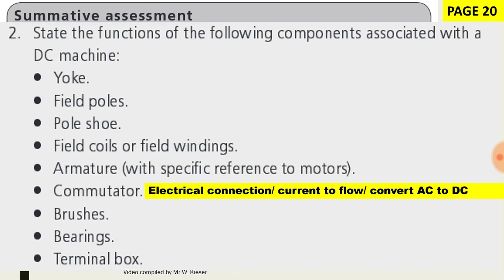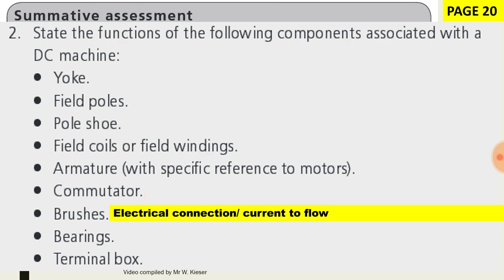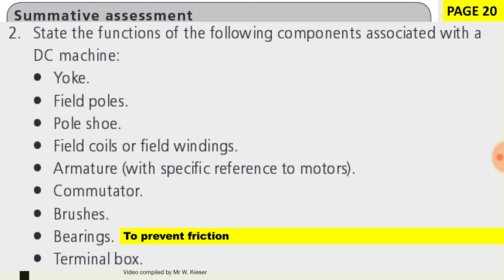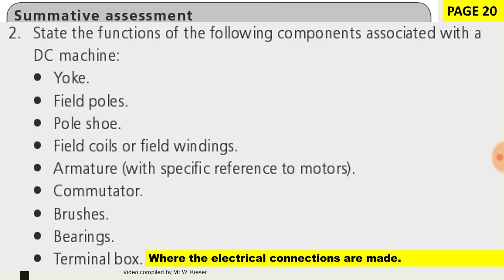The commutator's main function is to allow for electrical connection and to allow current to flow. It also converts AC to DC. Brushes also allow for electrical connection and for current to flow. The main function of bearings is to prevent friction, and the terminal box is where you will find the electrical connections.